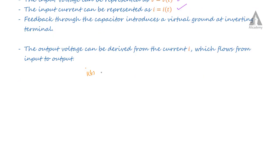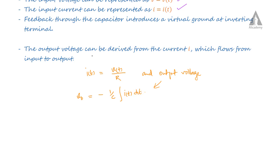I(T) is equal to V(T) divided by R. And the output voltage can be written as minus 1 by C, integral of I(T) dT. Now we can combine these two equations — substitute the value of I(T) into the voltage equation to find out the output voltage.